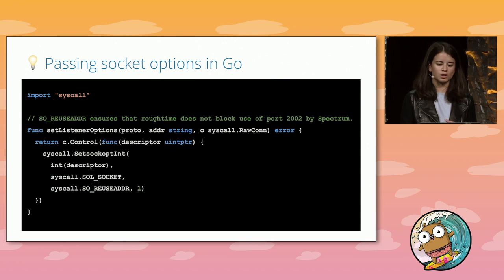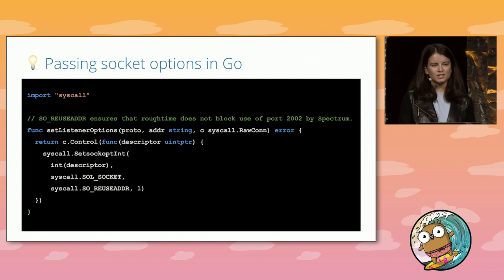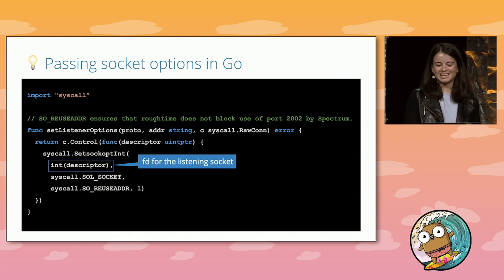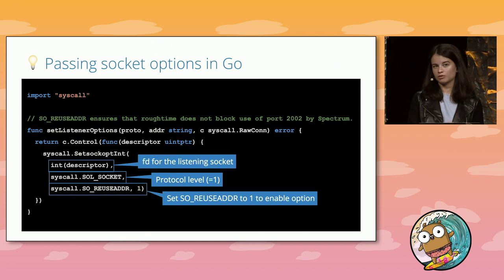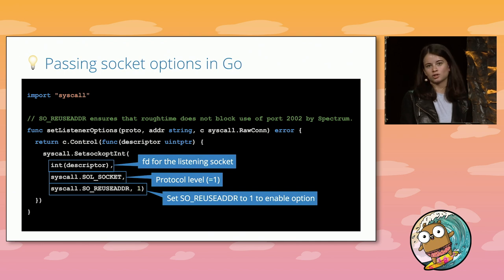To make the dependency chain clear: the ListenPacket function depends on the behavior in ListenConfig's control field; ListenConfig's control field depends on the RawConn interface's control function; and the control function depends on the callback passed into it — and that callback is where we set socket options. Our ListenConfig struct's control field is set to a function called setListenerOptions. This function returns the results of calling the RawConn argument's control method, passing in a callback that calls syscall.SetsockoptInt — which sets a socket option to a particular integer value — taking the file descriptor, a protocol level of 1 for socket level, our reuse address option, and the value 1 for on.